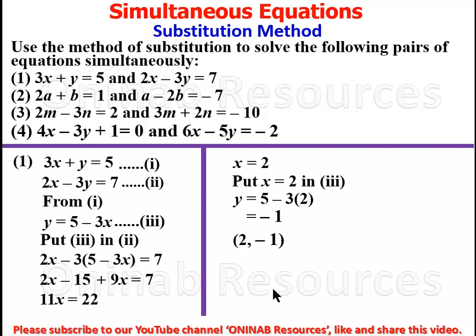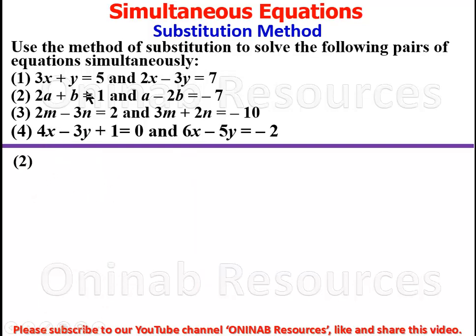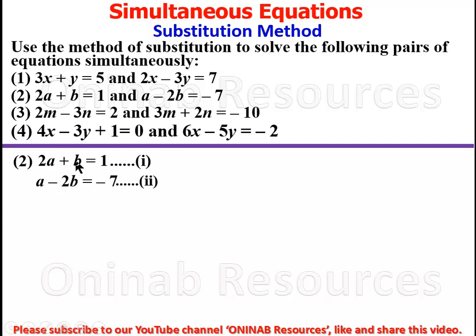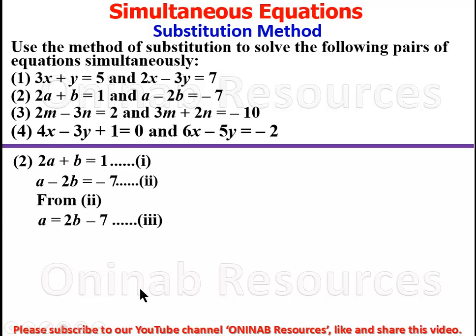Moving to Problem 2: equation one is 2a + b = 1, and equation two is a - 2b = -7. We have the liberty of making a or b the subject from either equation. We choose to make a the subject from equation two, giving a = 2b - 7, which we call equation three.